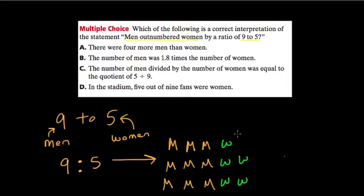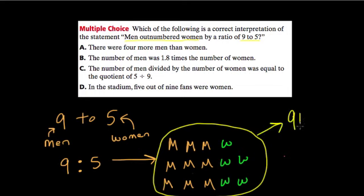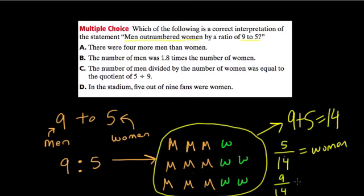So really, this is saying out of a group of how many? Well, a group of 14. So we had 9 plus 5, and that's 14. So within that group of 14, 5 of them were women. 5 fourteenths equal the women, and 9 fourteenths equal and represent the number of men.